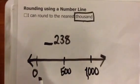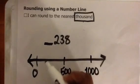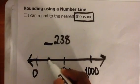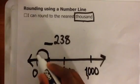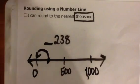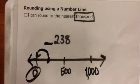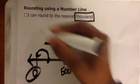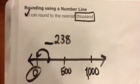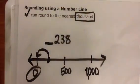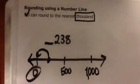I simply plot my number: 238, about right here. And I can see that 238 is closer to the benchmark zero. Therefore, 238 to the nearest thousand is zero. I can round to the nearest thousand!